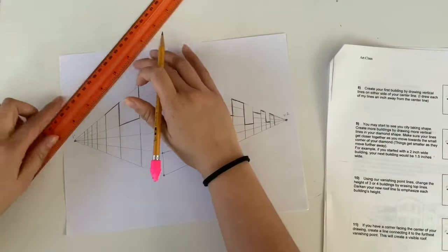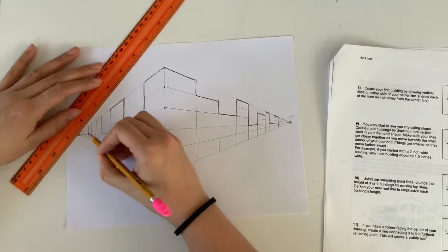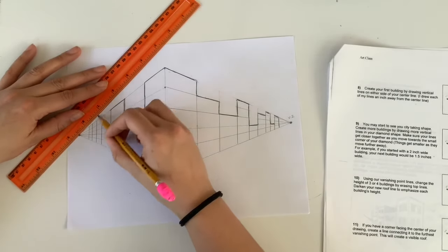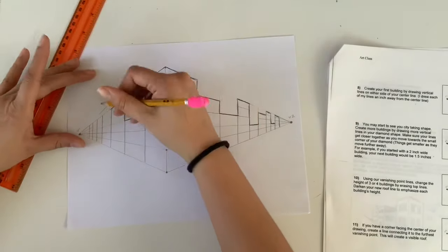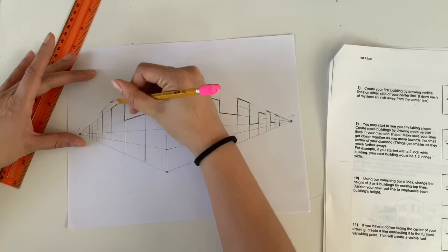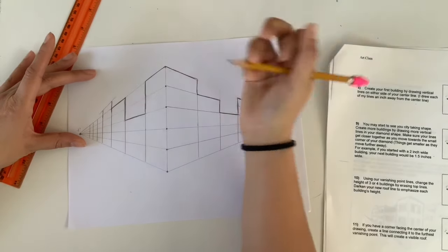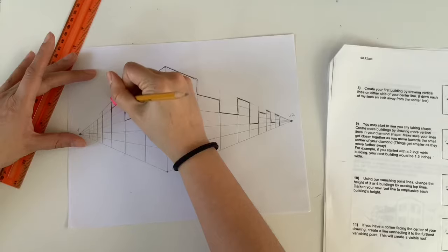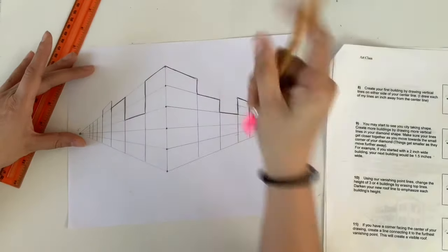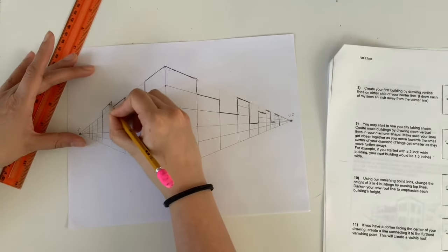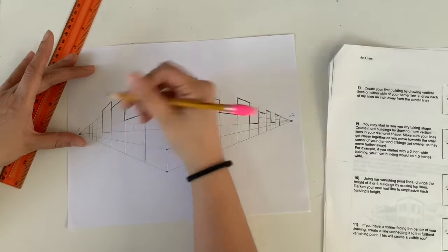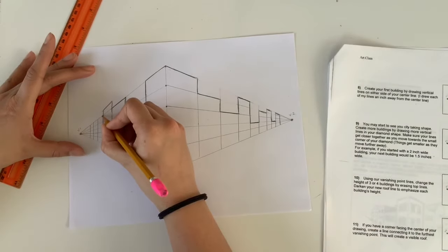Now let's say you want a building that's taller than five stories. To do that you're gonna create a line that attaches to the vanishing point but I'm only gonna draw a little bit of it just above the building I want to be taller and I can connect it up, erase my excess and you'll see that I now have a building that's taller than five stories. This is a six-story building so you can do this to any of them that you want to be taller.